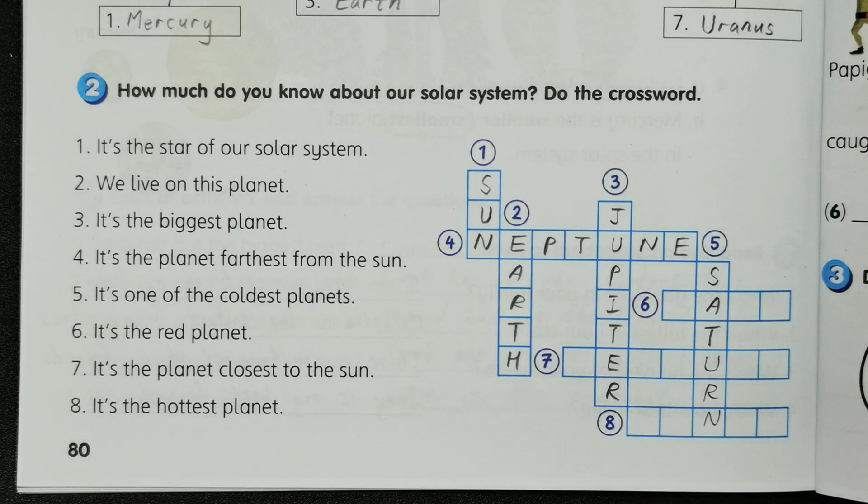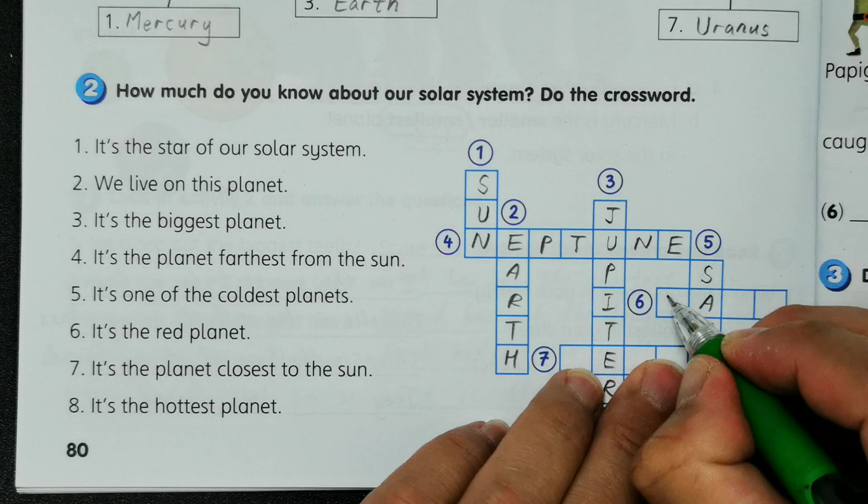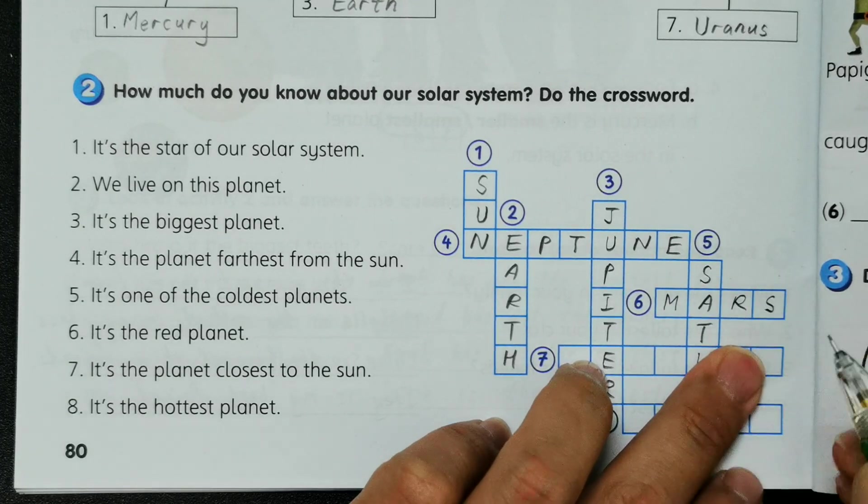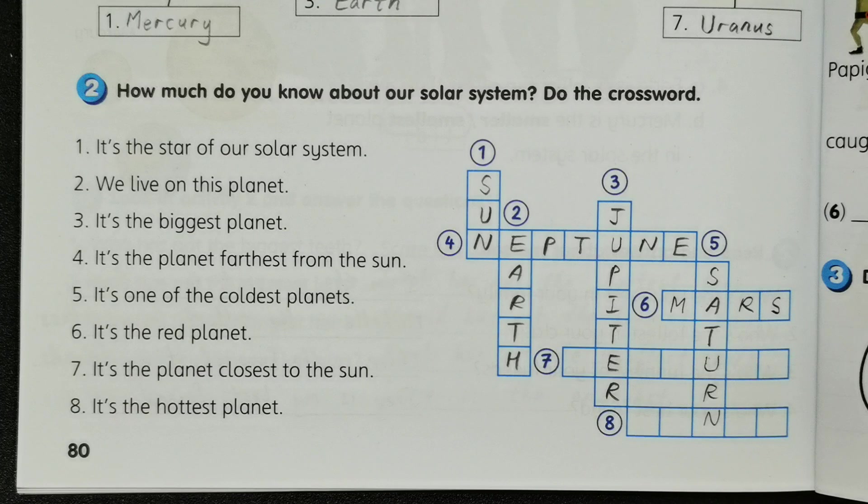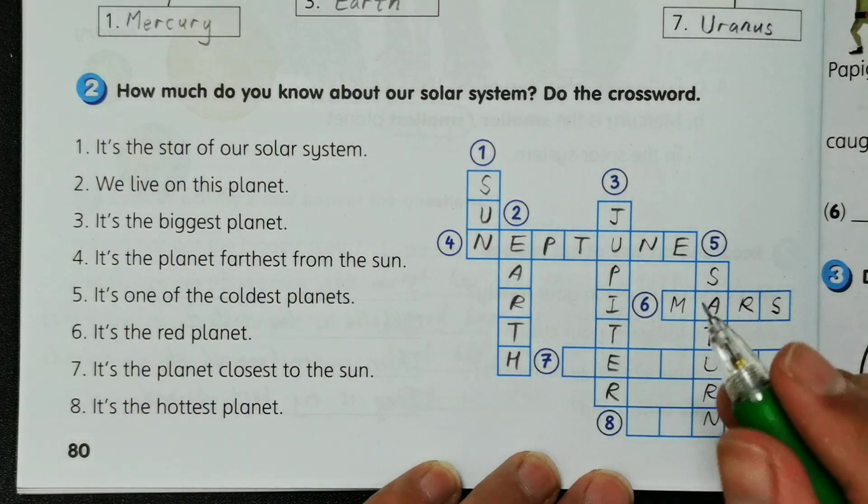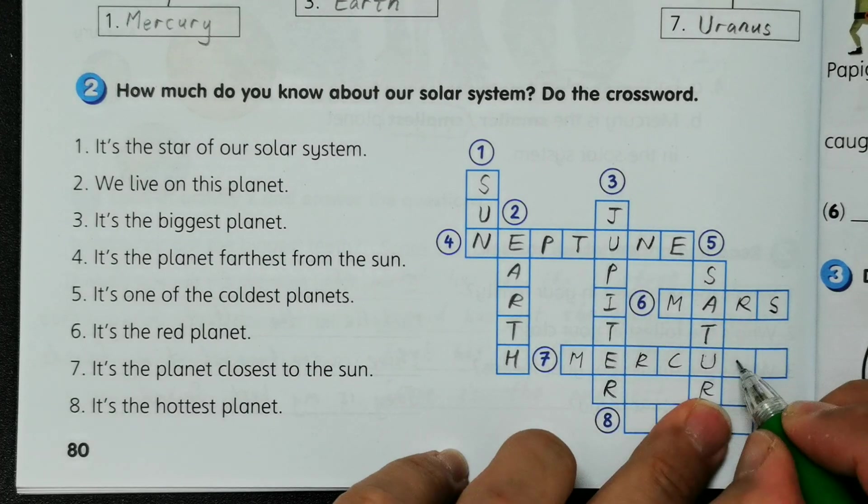And number six, it's the red planet, which is nearest to our planet Earth, so it is called Mars. And then number seven, we have it's the planet closest to the Sun, which is Mercury: M-E-R-C-U-R-Y.